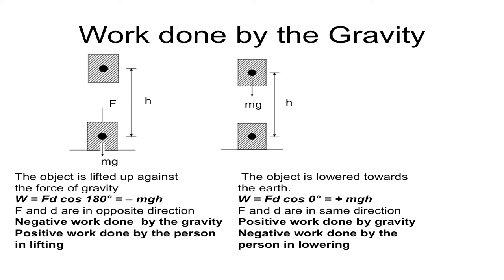Let's see the case in which the object is lowered towards the earth. The force and the displacement are both in the downward direction. Then W = F·D·cos 0°, because F and D are both in the same direction. It equals positive mgh. This means positive work is done by gravity and negative work is done by the person who is lowering the mass.